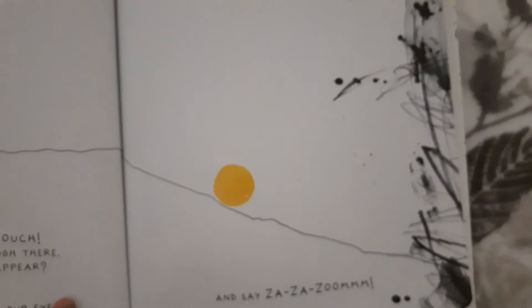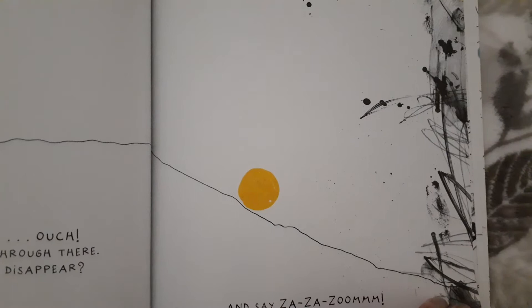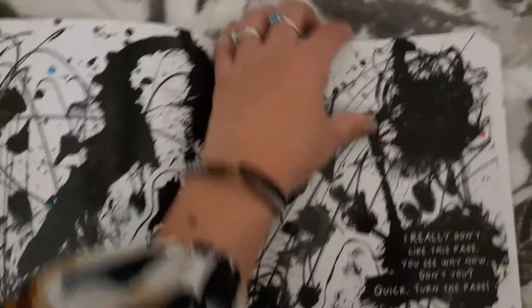Oh. Ouch! I don't want to go through there. Maybe I could just disappear. That looks scary. Let's hold hands. Close our eyes. And say, Zaza Zoom. Oh! Pow! Yuck! I really don't like this page. You see why now? Don't you? Quick! Turn the page. Whew! That's much better.